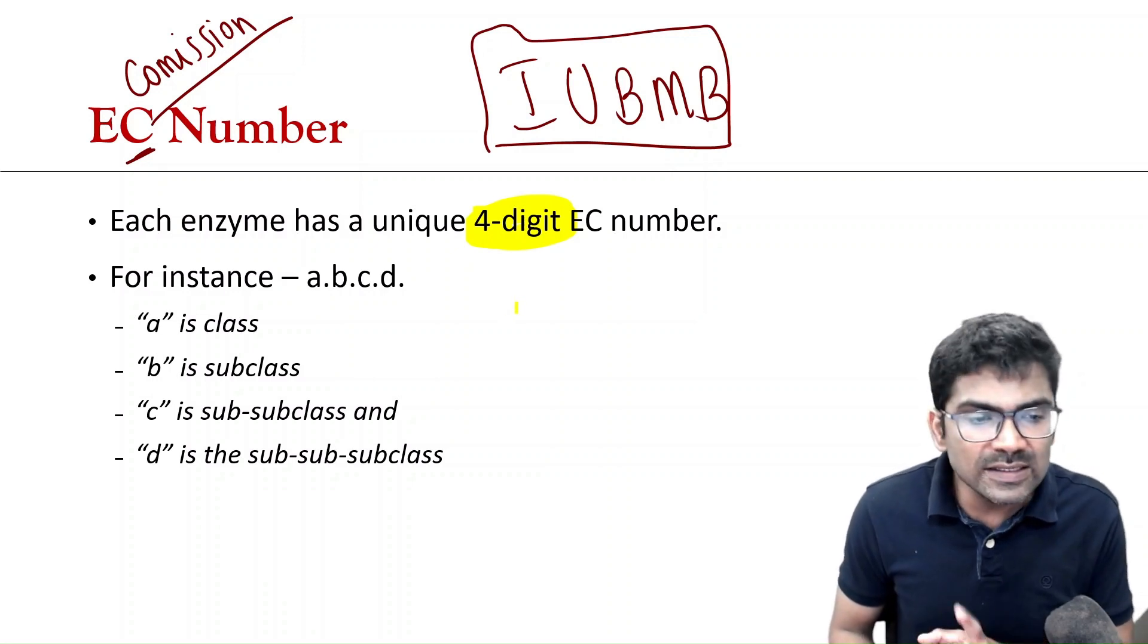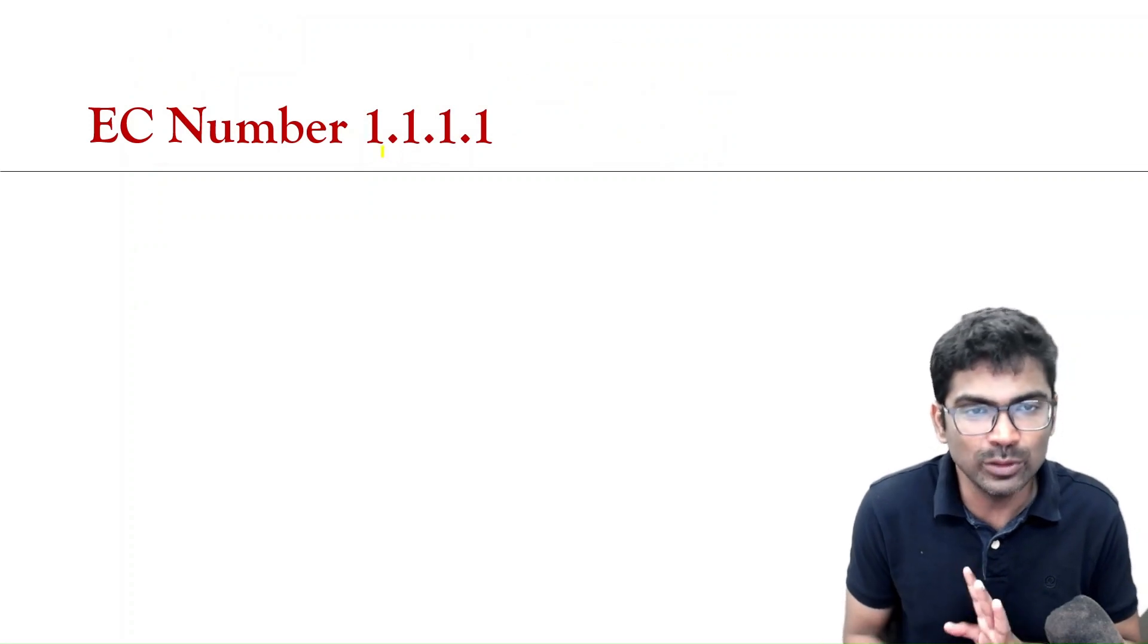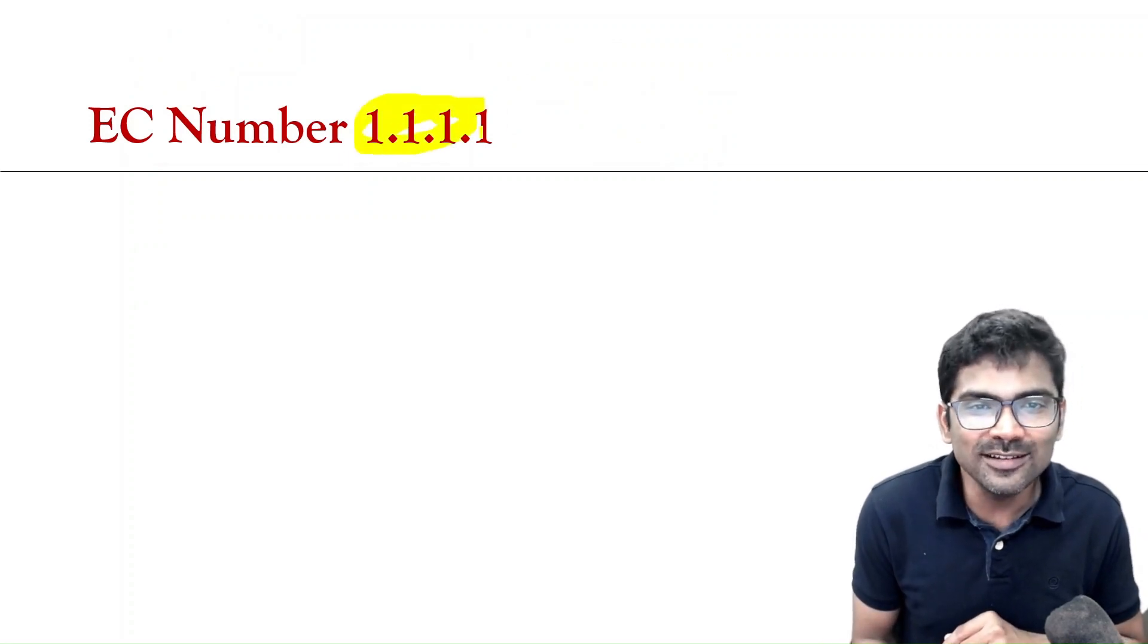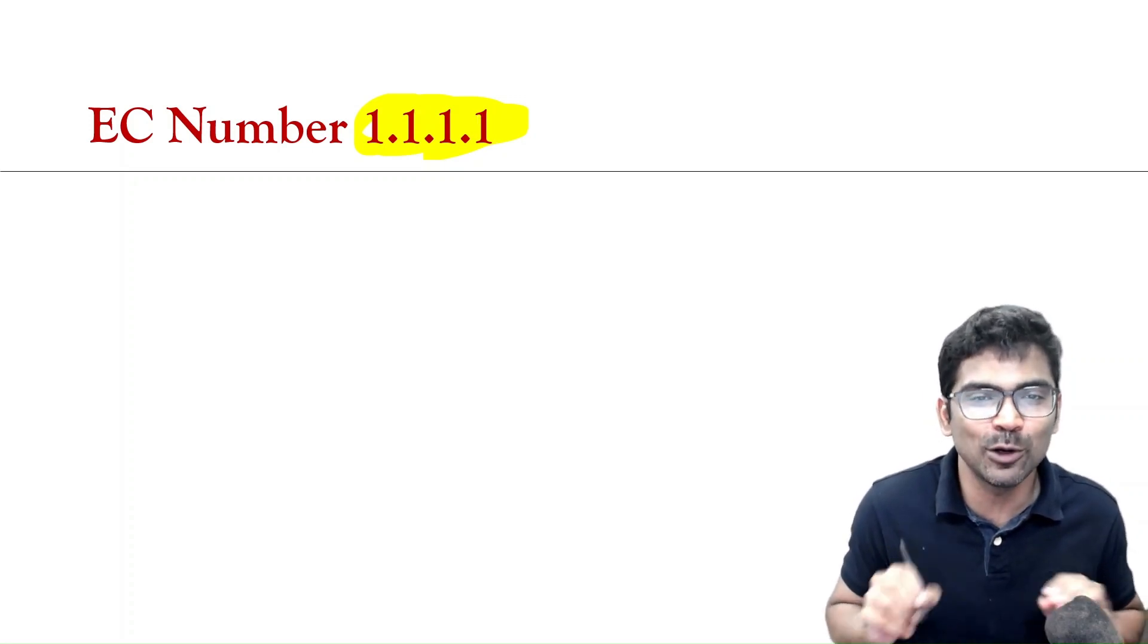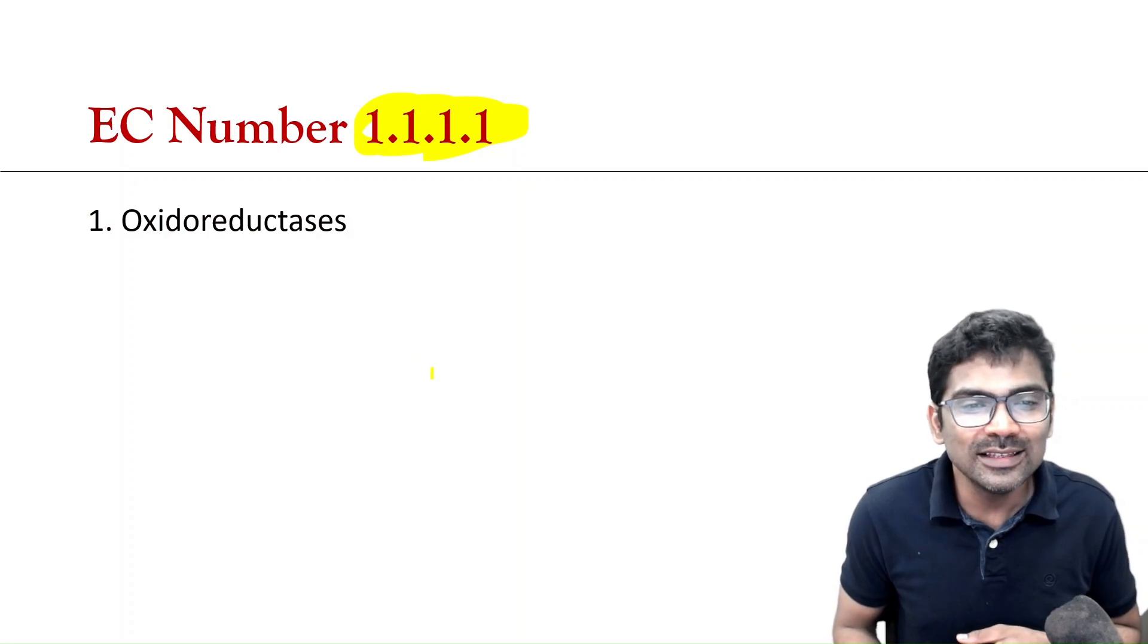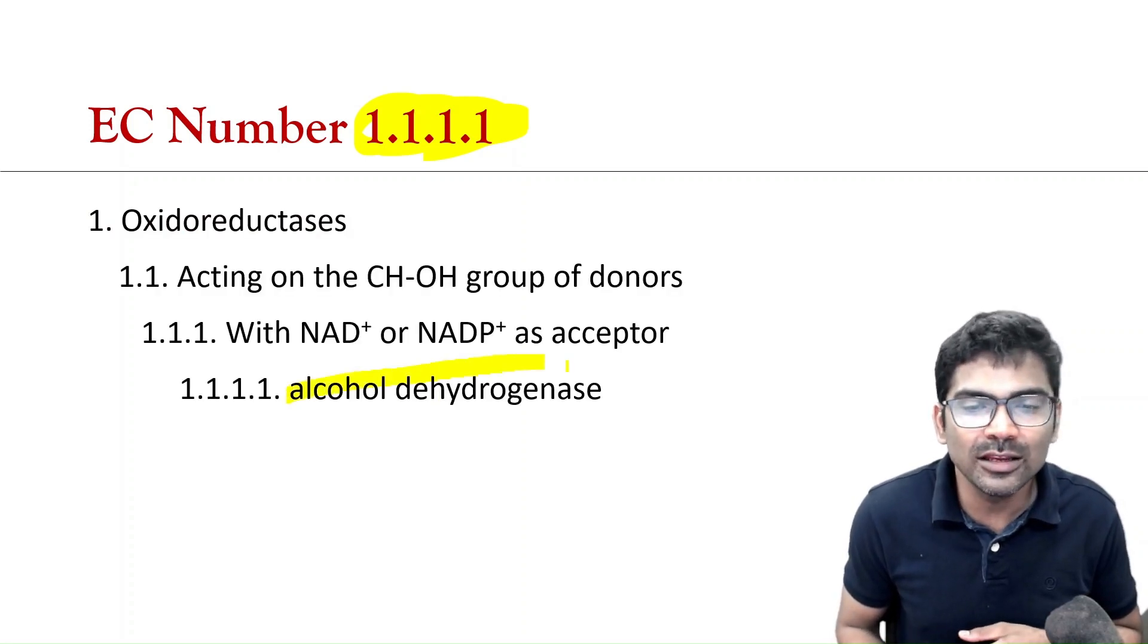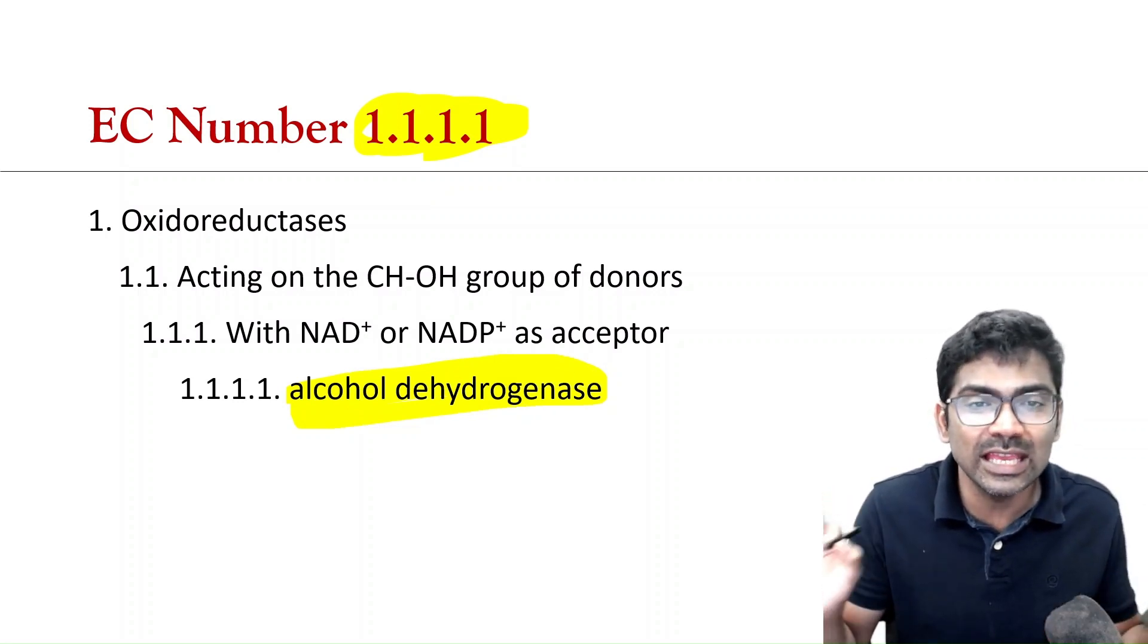So, there is no need to memorize the EC number of the enzymes. Never, ever try to do that. Just for fun, I will tell you, what is EC 1.1.1.1. Can you guess what is this enzyme? This enzyme is alcohol dehydrogenase. There is absolutely no need to memorize EC number of any enzyme.